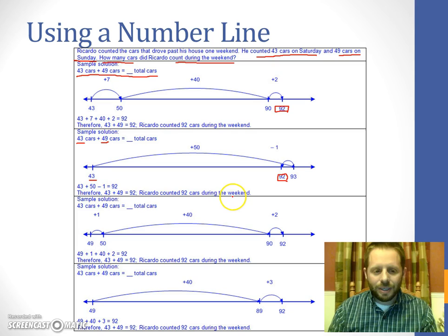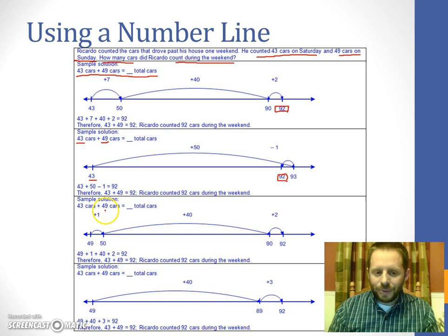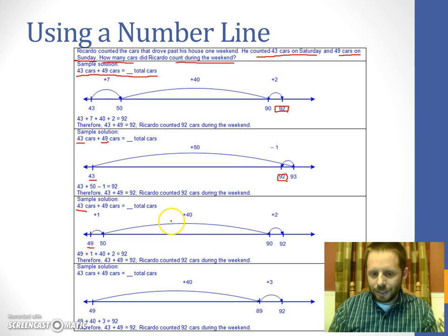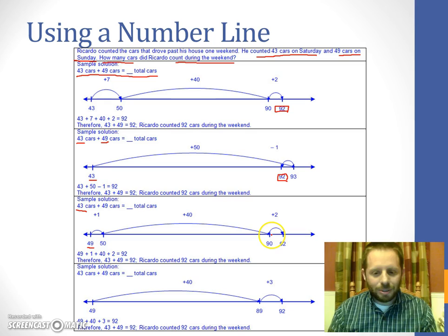Here's another way to do it. This is using that commutative property, where we switch the order of the numbers. So we're going to do the 49 first instead of doing the 43 first. And then we're going to treat the 43 just like we did earlier with the 49. We're going to break it apart into smaller chunks to make our jumps. So I'm almost to 50. Let's just add one and get to 50. Now I've used one out of my 43. So that still leaves 42 to go. So let's use 40 more of those to go from 50 to 90. And that still leaves me two left to go. So I'm going to get my 92.